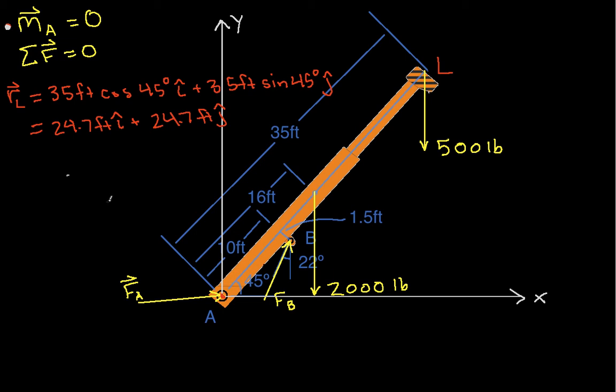Okay, so that gives us then this relative position vector out to here. We also need the relative position vector to this point here, where it's the center of mass of the boom. So we'll call that point W.